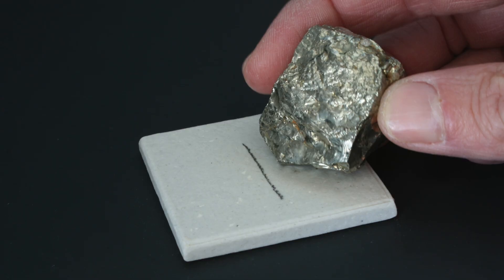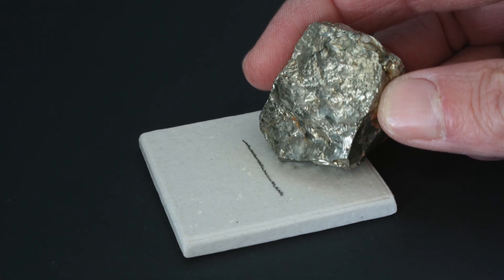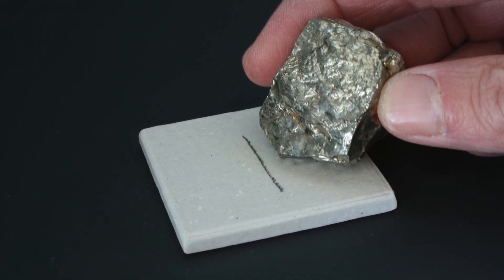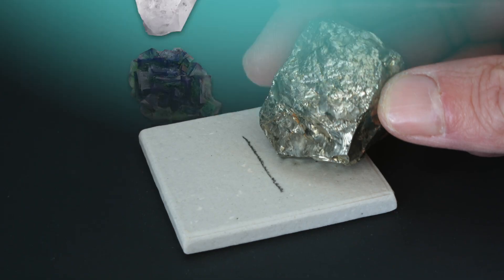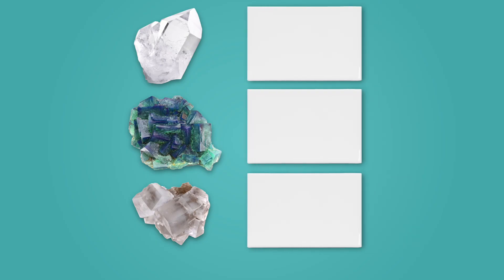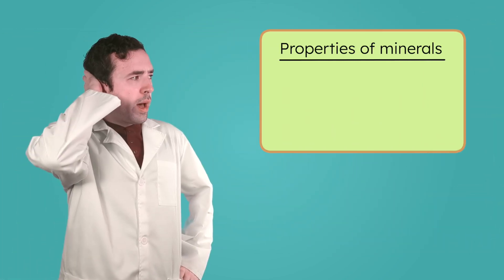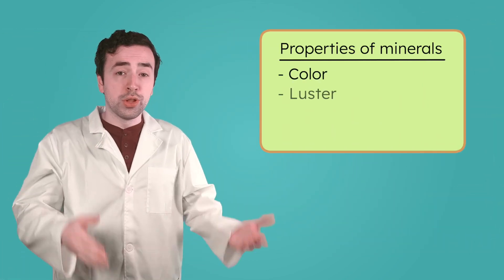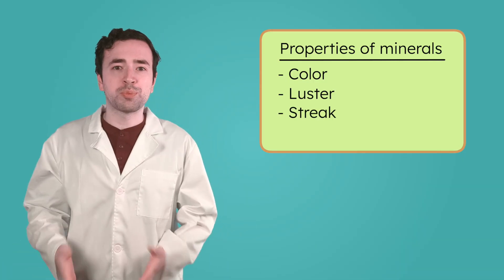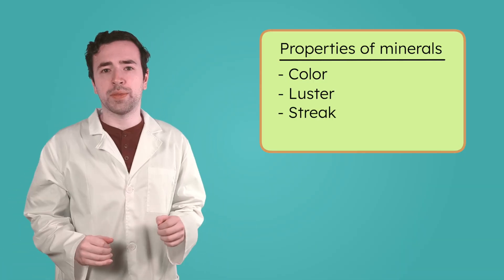Pyrite's streak is actually a greenish black streak. Real gold leaves a golden yellow streak behind. What color streaks do you think my minerals will have? Let's test it out. If we rub each one across a hard surface called a streak plate — all three have a white streak. That was unexpected. We know the color, luster, and streak of the minerals, but we still don't have enough information to tell exactly what they are.